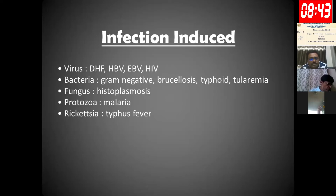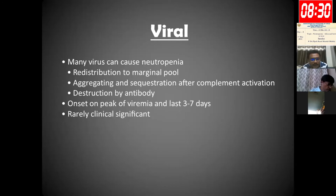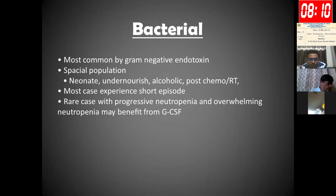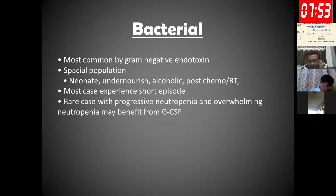Viral infections mostly cause neutropenia via direct marrow infection and production of autoantibodies, which can cause dangerous clinical illness when it persists for more than three days. Some bacterial infections — especially gram-negative endotoxin-producing bacteria — cause bacteremia followed by neutropenia. Fungal and protozoal infections, especially malaria and typhus fever caused by rickettsia, can also produce neutropenia. Special populations like neonates and malnourished or alcoholic persons are vulnerable to endotoxinemia and subsequent neutropenia. Rare cases with progressive or overwhelming neutropenia may benefit from G-CSF therapy.